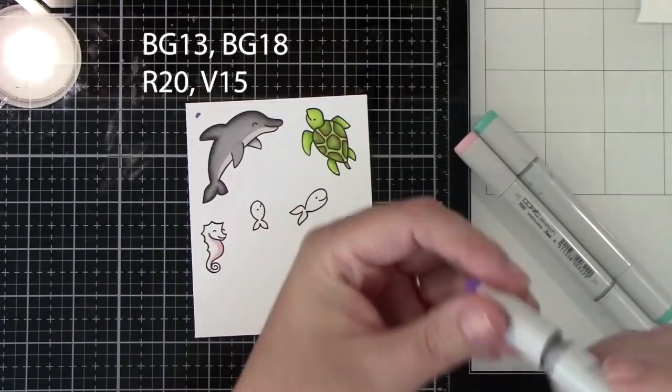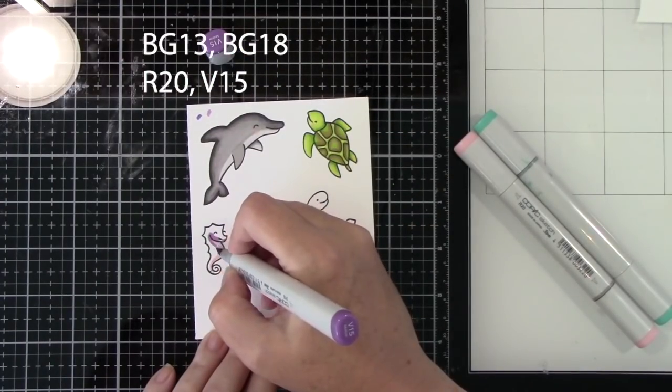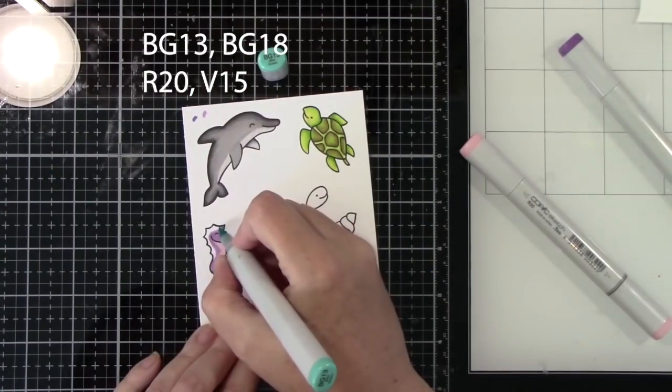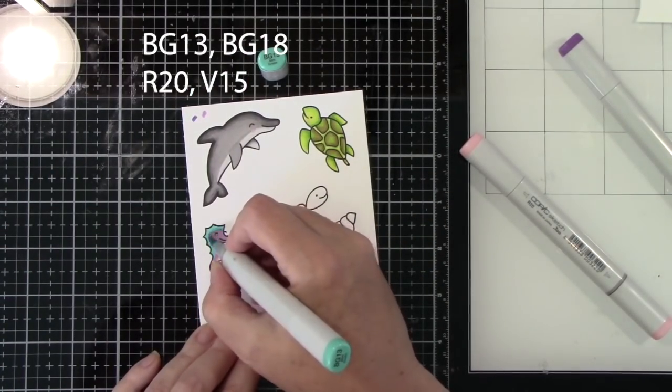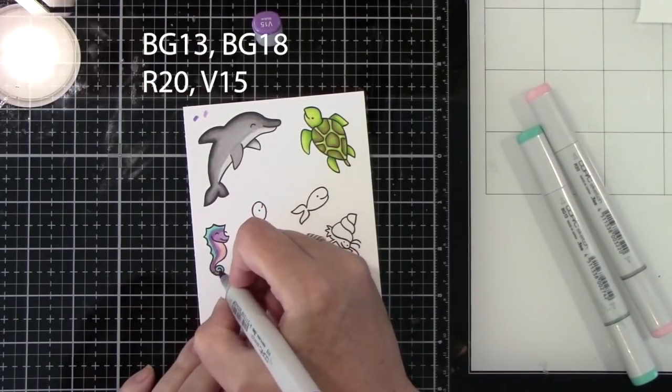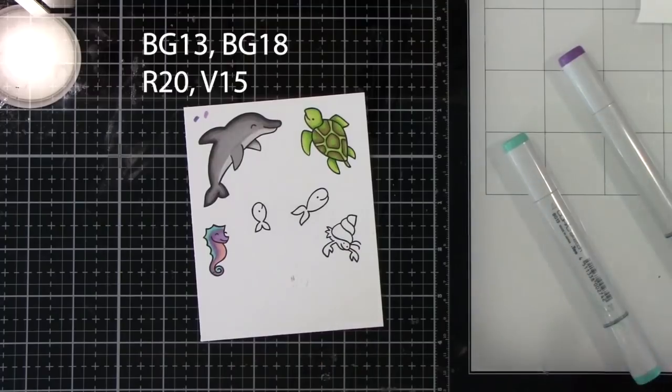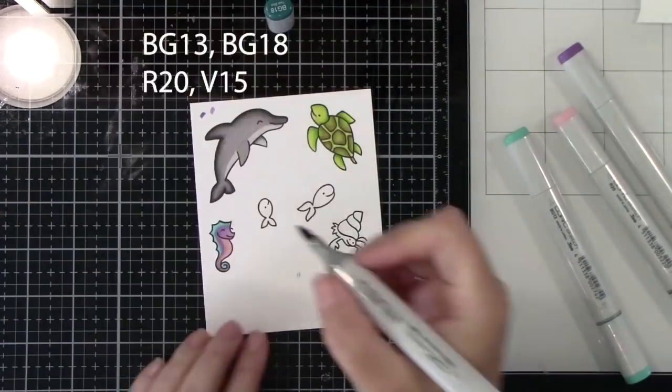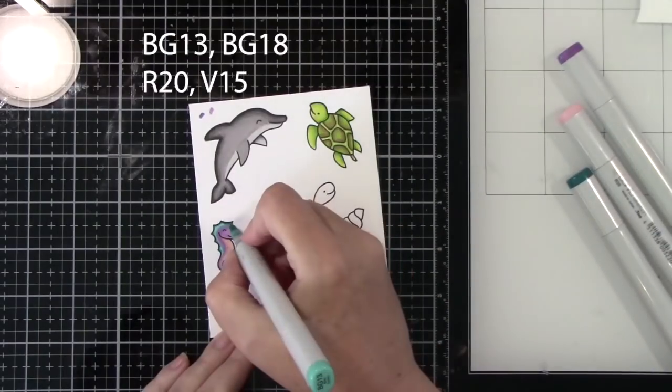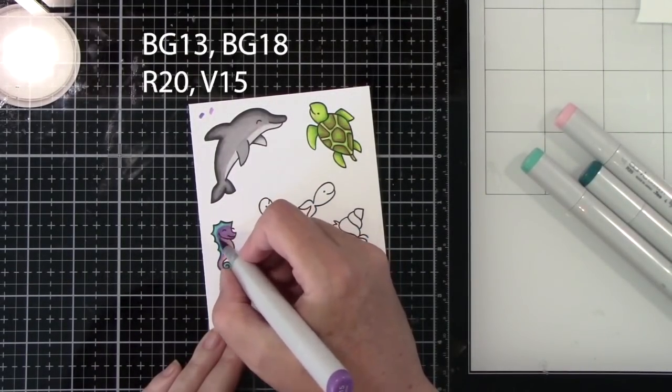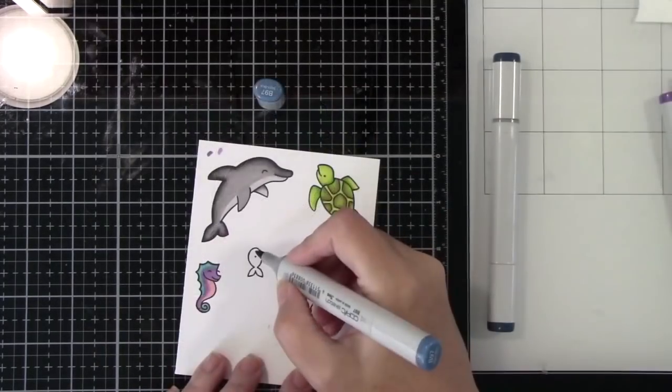Now for this little seahorse, I am using R20 for the belly, V15 for the face and kind of down the body, and then BG13 and BG18 for the little spiky part on him. And I just thought, what a colorful, fun seahorse. I don't really think seahorses are this colorful in real life, but in my world, they are.